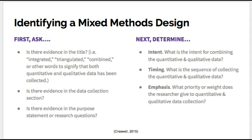Before diving into the individual types of mixed method designs, how can we determine if any of the designs have been used in a study? If you're looking at a study and want to identify if a mixed method design had been used, here are a few key questions to ask. First, is there evidence available in the title of the study? The presence of both quantitative and qualitative in the study may be an indicator, but terms such as integrated, triangulated, or combined are also easy ways to identify if two types of data have been utilized. The second question is to ask if evidence is available in the data collection section — both qualitative and quantitative data should be used. Third, the reader can ask if there is any evidence in the purpose statement or research questions indicating intent to collect both types of data.